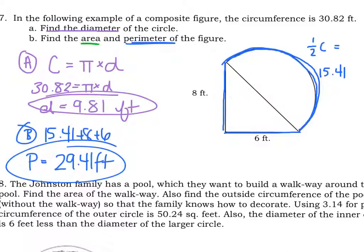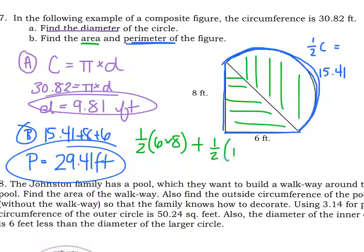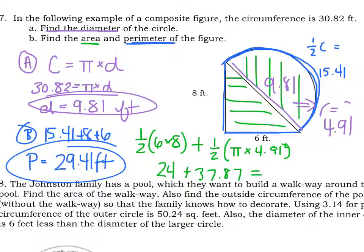Finally, we have to find area. Do it by parts. First, find the area of our triangle: 1/2 base times height, 1/2 times 6 times 8, plus the area of half our circle. Half of a circle: 1/2 pi times r squared. Well, we know the whole diameter is 9.81. So r is 4.91. So 4.91 squared. And when you figure this out, you get 24 plus 37.87, which gives us a grand area of 61.87 square feet. If you have questions, ask. But if you take it part by part, it's really not that hard of a problem.